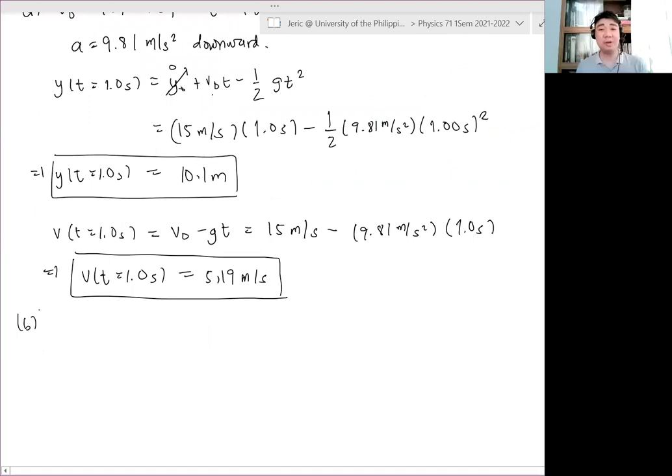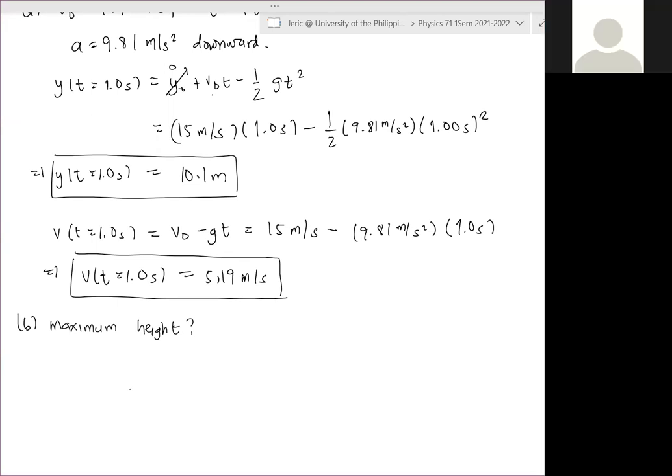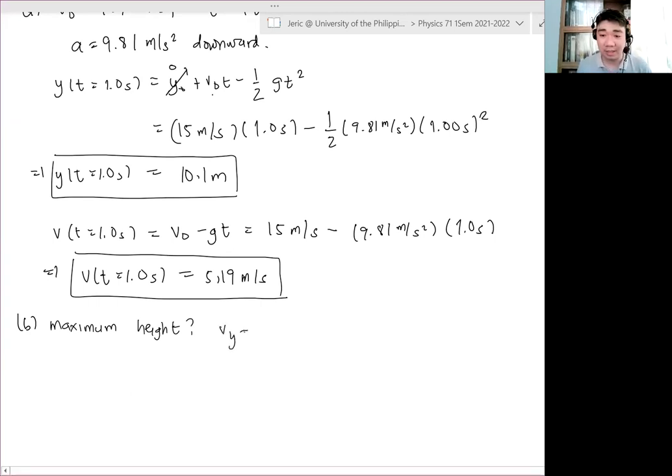So letter B. How do we determine the maximum height? How do we determine the maximum height? Actually may masadaling way. Anong condition para maging maximum height ang particle? Your velocity equals zero? The velocity at the maximum height is zero. So since the particle changes its direction so dadaan dapat ang zero yan. Positive velocity zero negative velocity. Therefore my Vy there should be equal to zero.